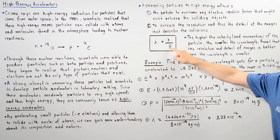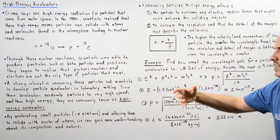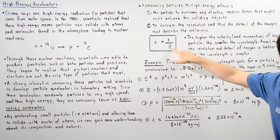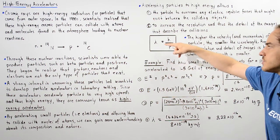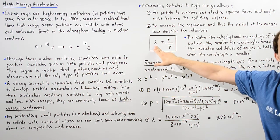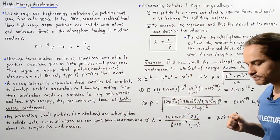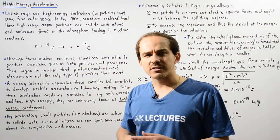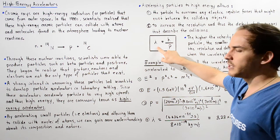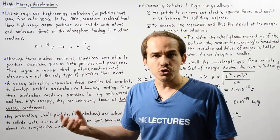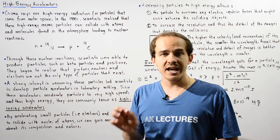We see that the greater the velocity and therefore the greater the momentum of our particle is, the greater this denominator term is and the smaller our wavelength is. Recall in our discussion on diffraction that the smaller our wavelength is, the higher the resolution is.